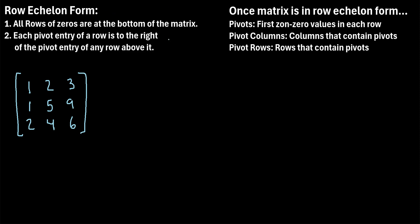There are two criteria that a matrix must meet to be in row echelon form. The first is that all rows of zeros are at the bottom of the matrix, and the second criteria is that each pivot entry of a row is to the right of the pivot entry of any row above it.